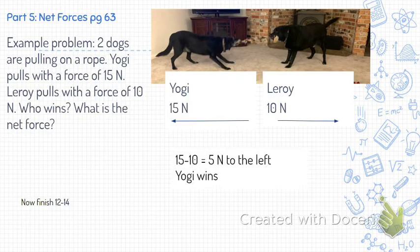And so Yogi is 15 Newtons to the left. Leroy is only 10 Newtons to the right. And so Yogi wins with a net force of 5 Newtons to the left.